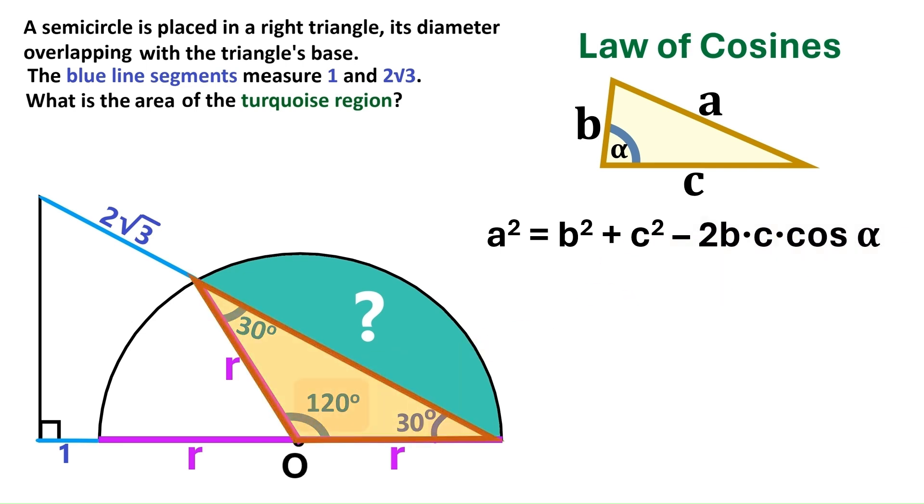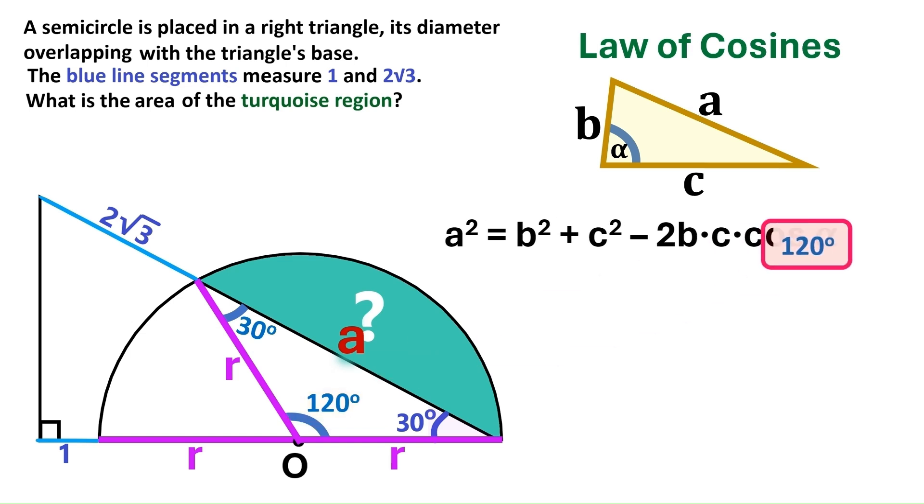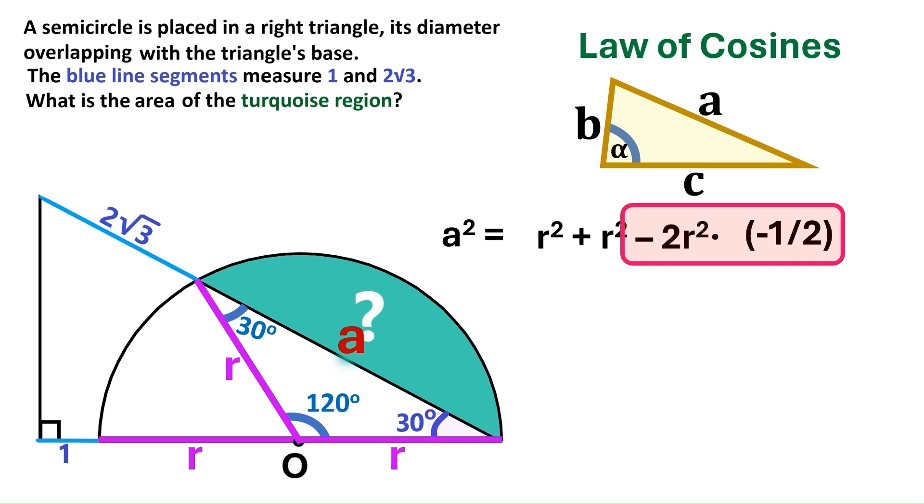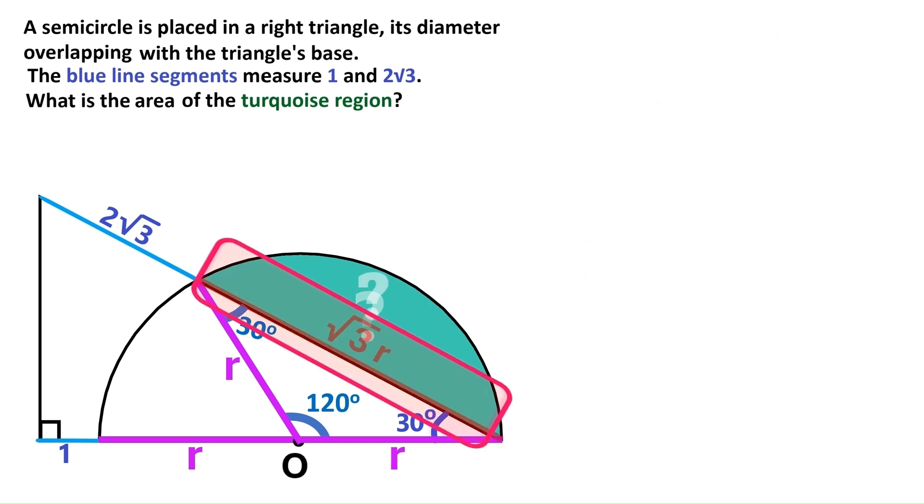This is our triangle and this is the side we want to find. So let's name it A. Then alpha would be this 120 degree angle. So let's put that into the formula. Cosine 120 has a well-known value that is minus 1 over 2. Side B is R and side C is R. So let's replace the B's and C's in the formula with R. Minus 2 R squared times minus 1 over 2 is plus R squared. We can add these three and we get A squared equals 3 R squared which means A equals radical 3 times R.